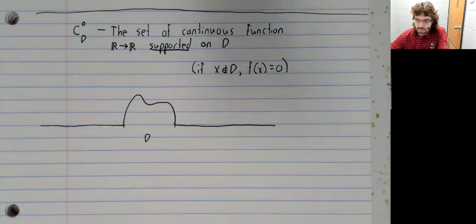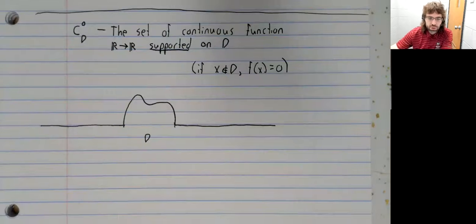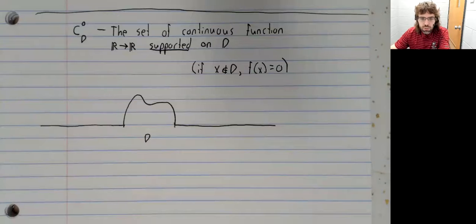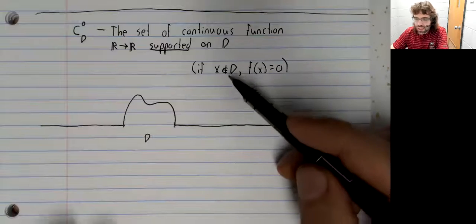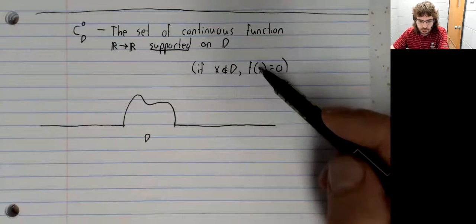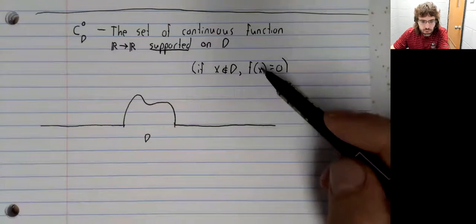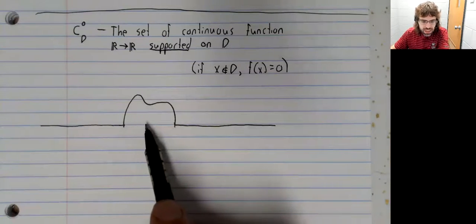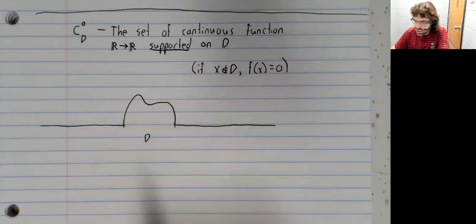This is a subset of the vector space of all continuous functions, and it's a subspace of that vector space. Certainly the zero function is here. I say that if x isn't in D, then f of x is zero, but f of x is allowed to be zero in D as well. So the zero function is here.